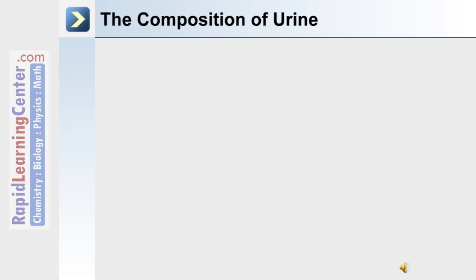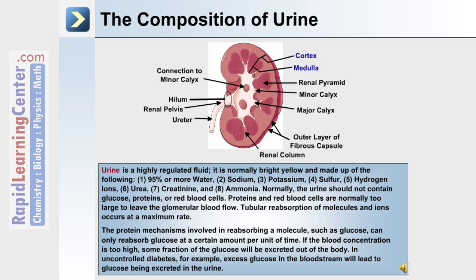Urine is a highly regulated fluid. It is normally bright yellow and made up of the following components: 95% or more water, sodium, potassium, sulfur, hydrogen ions, urea, creatinine, and ammonia. Normally, urine should not contain glucose, proteins, or red blood cells. Proteins and red blood cells are normally too large to leave the glomerular blood flow.